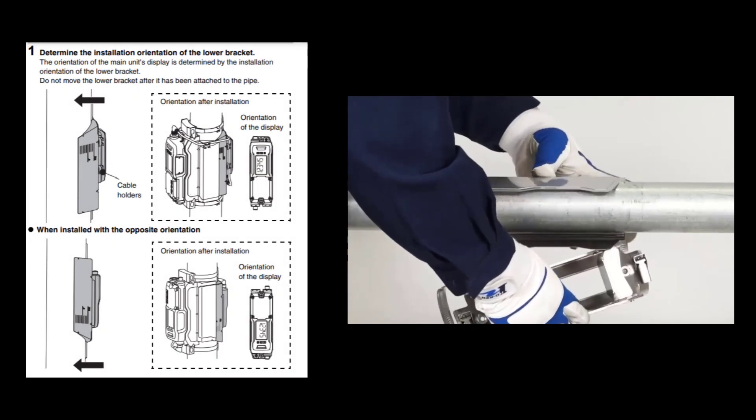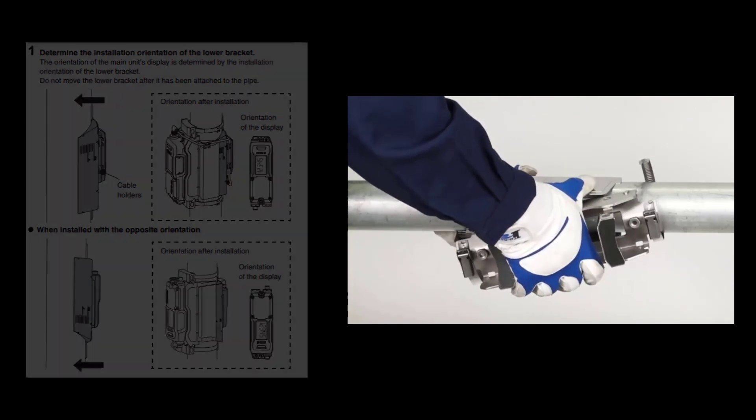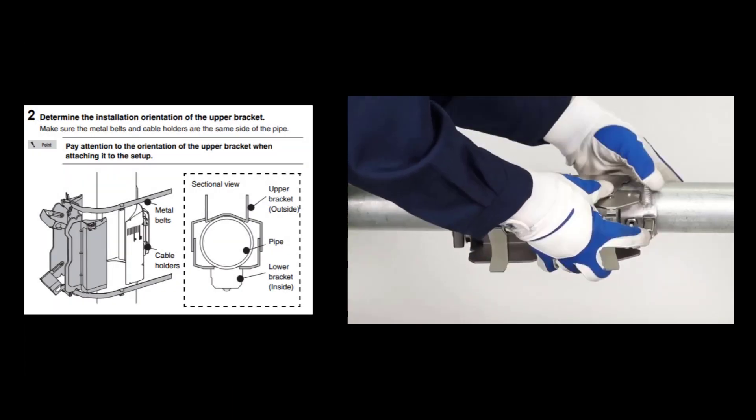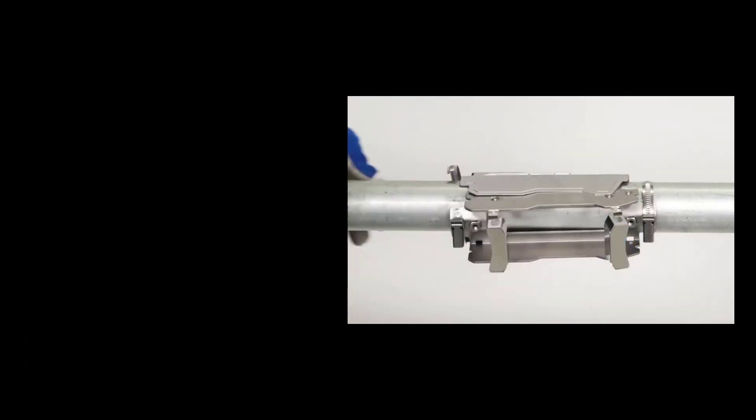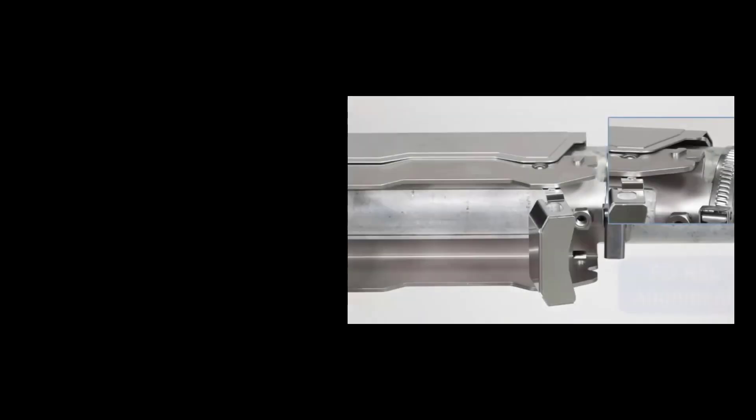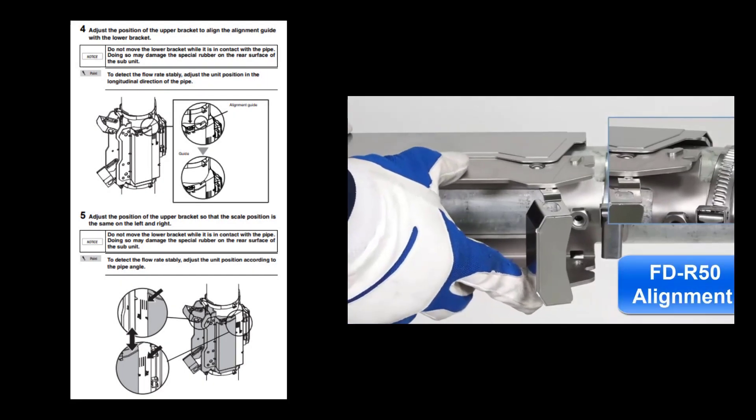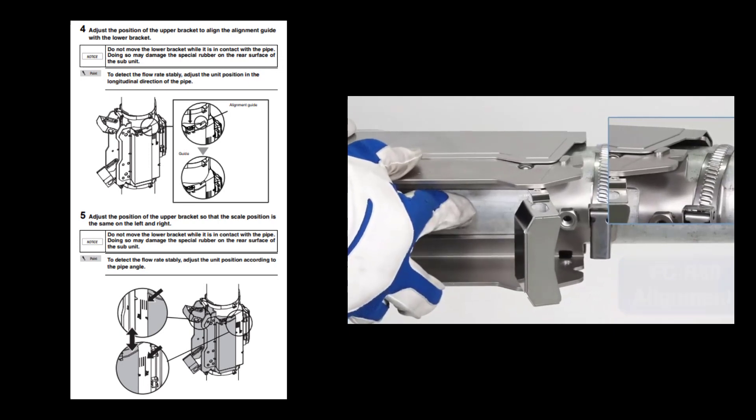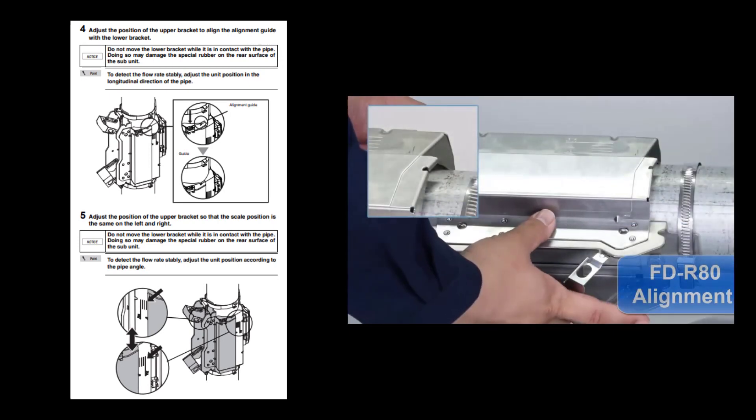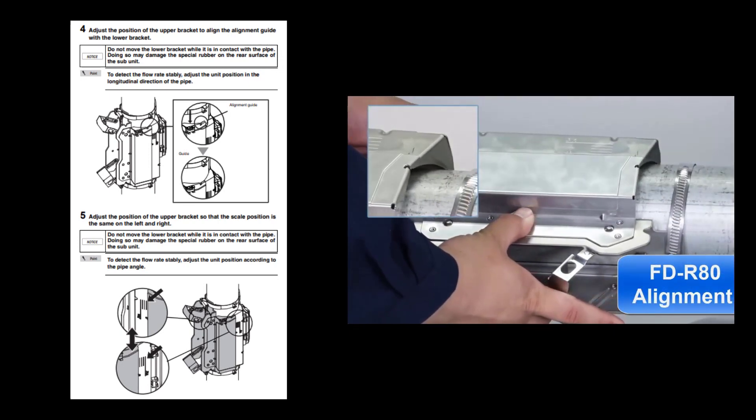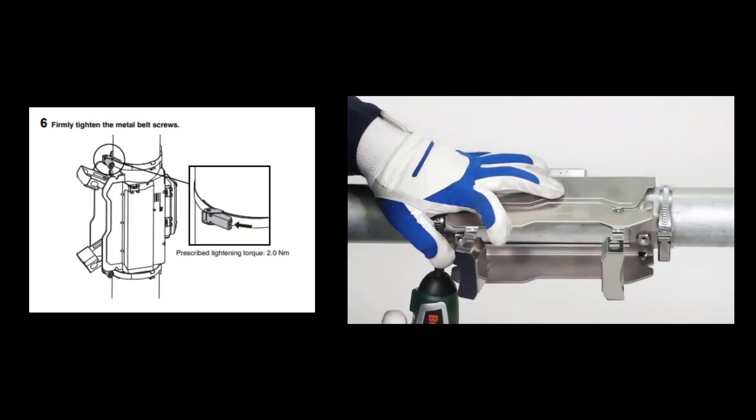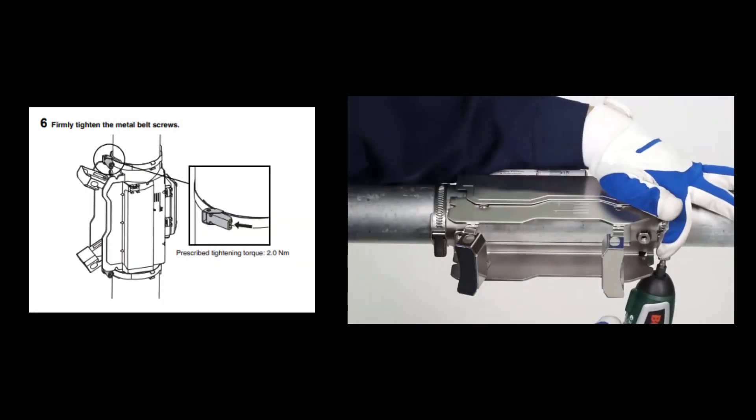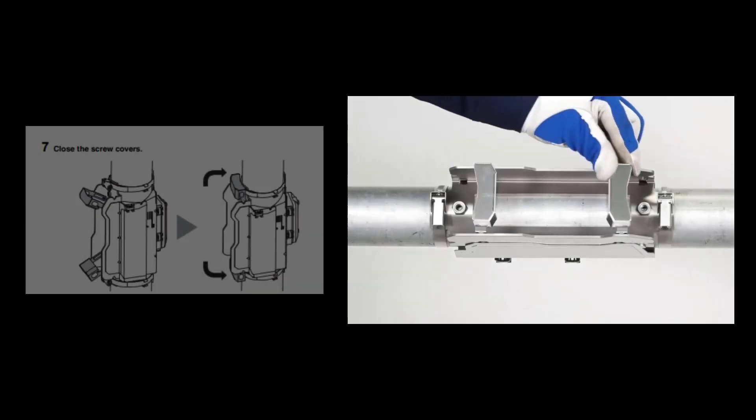Start by attaching your lower bracket. Wrap the metal mounting straps of the upper bracket around the tabs of the lower bracket and insert those metal straps into the screw brackets. Be sure that the upper and lower bracket are aligned on both sides so everything is straight on the pipe. Next, tighten both screws so that the entire bracket is evenly secured to the pipe and close the screw covers.